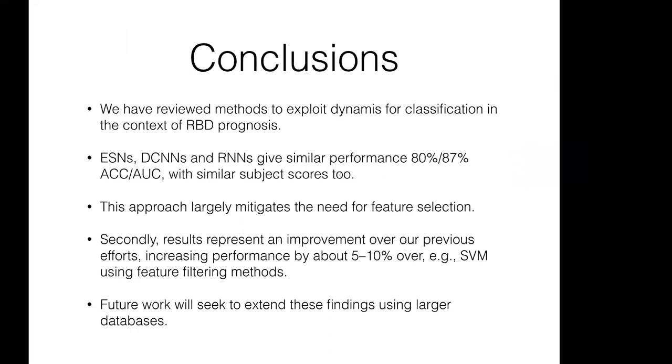So in this presentation I've given you hopefully a flavor of first the problem at hand of prognosis in RBD and why EEG can be useful for it and also have discussed deep learning methods starting from echo state networks and autoencoders and then deep convolutional networks and recurrent neural networks that can be used for processing spectrogram-like data with mitigation for feature selection. And the results were an improvement over our prior attempts with techniques like support vector machines that also required extensive filtering methods. And of course future work will need to extend these findings into larger databases because to actually exploit deep learning well you need a lot of data and it's something we're working on now. Thank you for your attention.